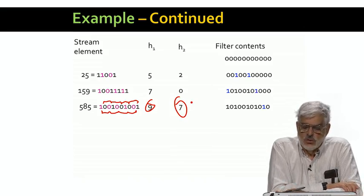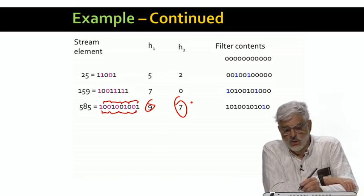So we set bit 7 and 9 to 1. But bit 7 was already 1, so we make no change. Bit 9 is set to 1, as you see here.